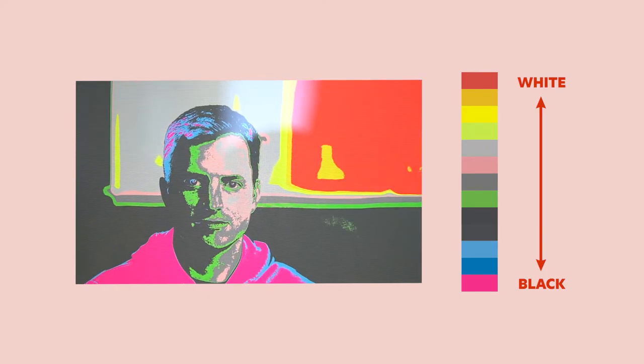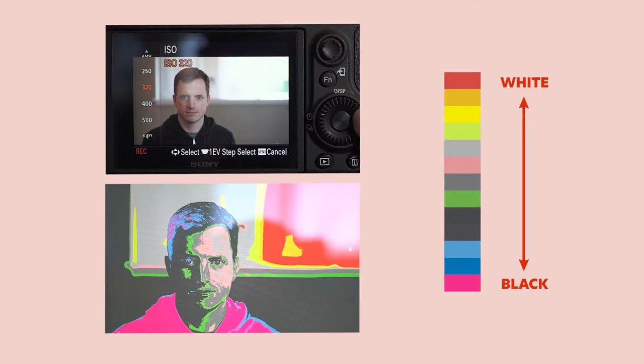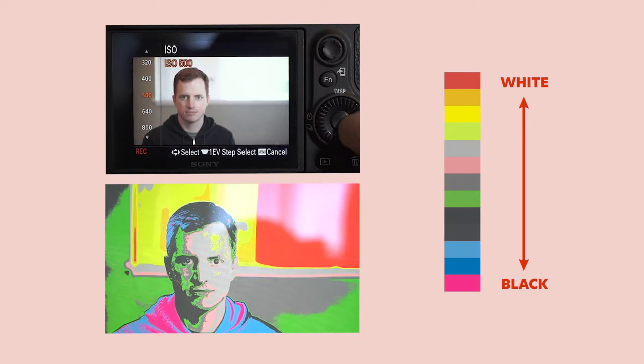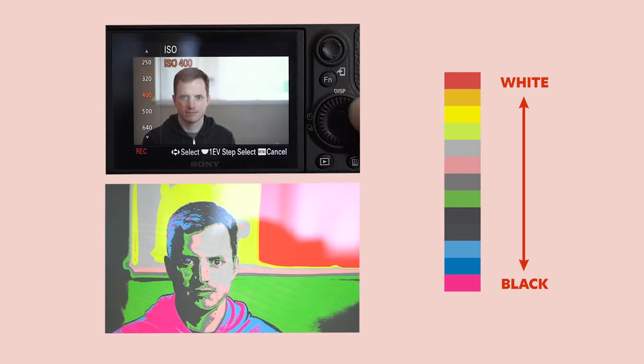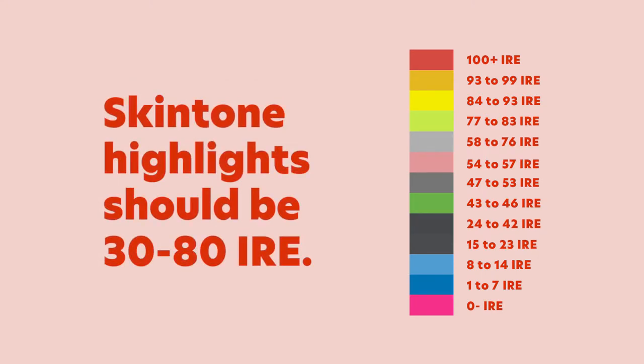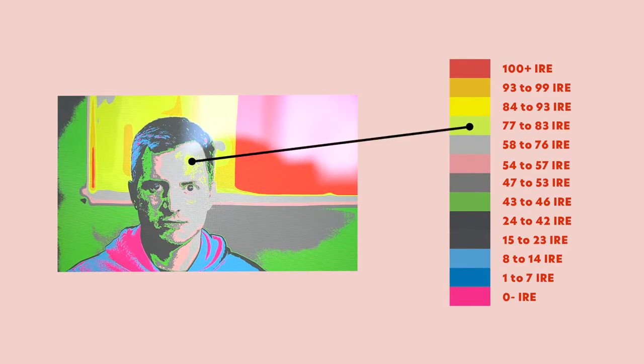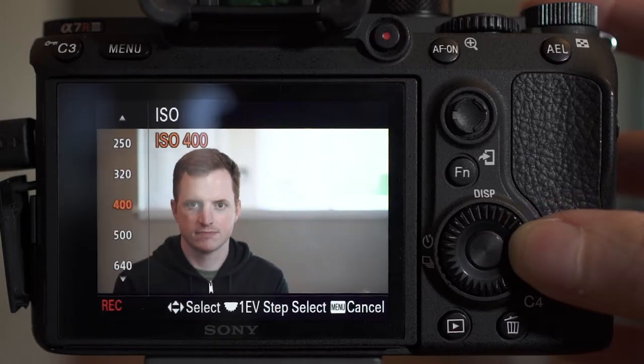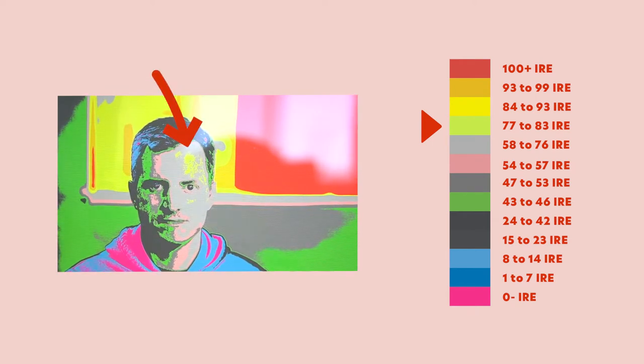With false color we can see whether the areas that are too bright show up on Miles's face or not. When it comes to skin tones, you're looking for highlights to be between 30 and 80 IRE depending on the skin color. Since Miles has really light skin, we're looking for highlights around 80 IRE, which means we're looking for the highlights to be lime green. I'll adjust my exposure on Miles until I see just a little bit of that green color on the highlights of his face.